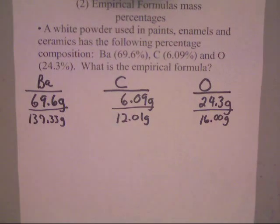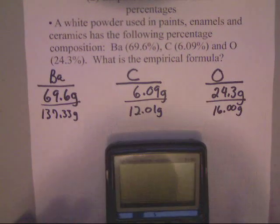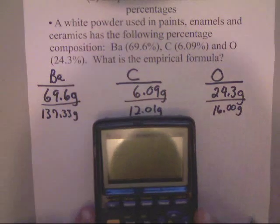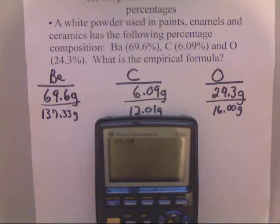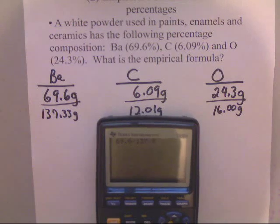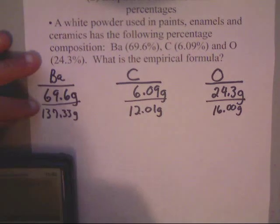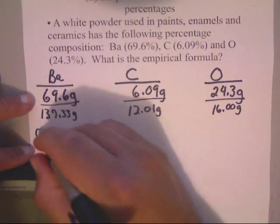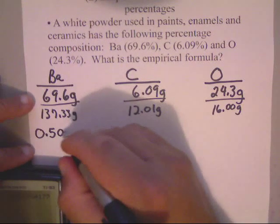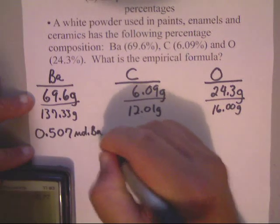Now, after that, we just take a calculator and we divide them. You've got 69.6 divided by 137.33, and that gives us this number. Now, I would keep three sig figs, because that's what they're showing, so that would be 0.507, and that would be moles of Ba.